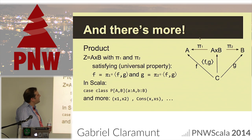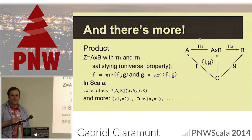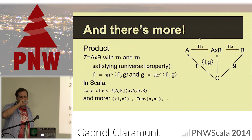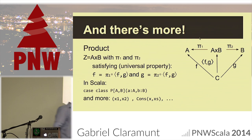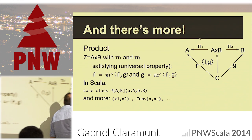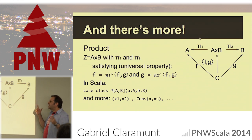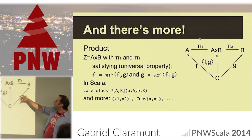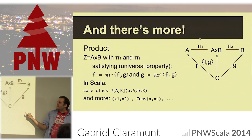After the product comes the co-product. What do you think it will look like? Exactly — the co-product is the dual category: let's reverse the arrows, everything reversed.